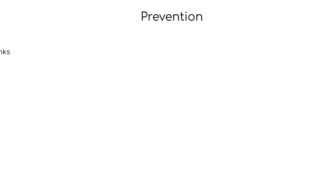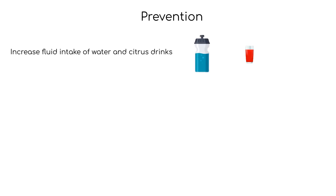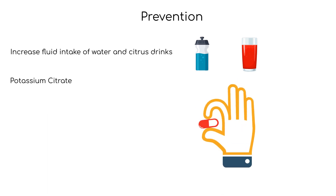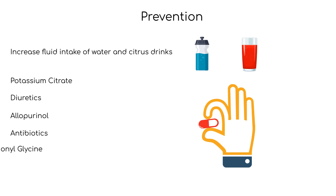Prevention of kidney stones includes increased fluid intake of water or citrus drinks, which may help to prevent kidney stone formation. Medications include potassium citrate and diuretics for calcium stones, allopurinol which helps with purine metabolism for uric acid stones, antibiotics for struvite stones, and mercaptopropionylglycine for cystine stones, which is an antioxidant used for heart disease.